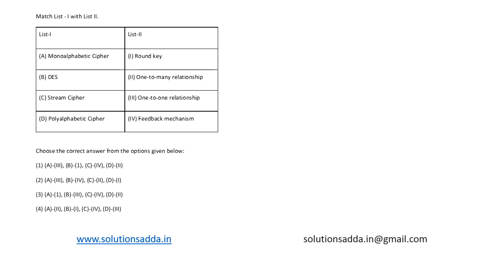This is a question from cryptography. We are asked to match list 1 with list 2. In list 1 we have monoalphabetic cipher, and in list 2 we have round key, one-to-many relationship, one-to-one relationship, and feedback mechanism.